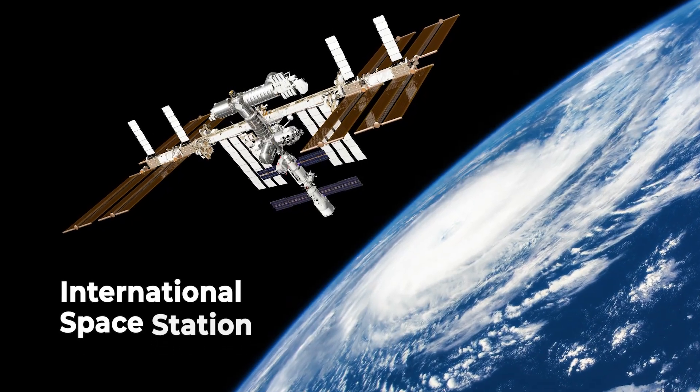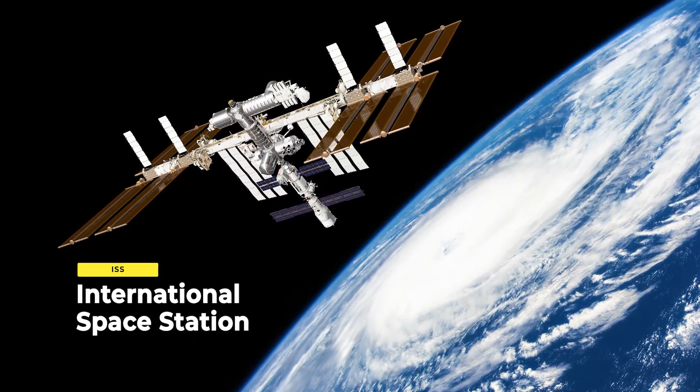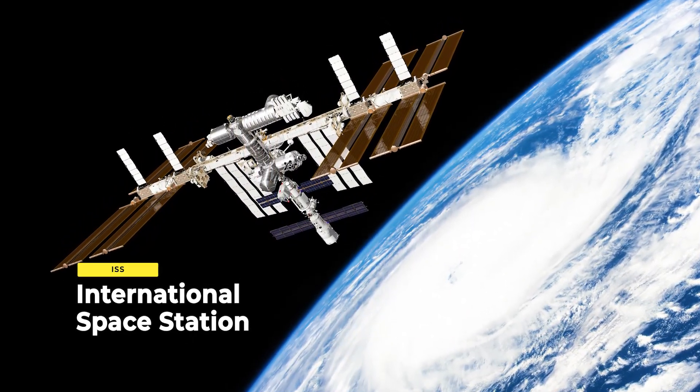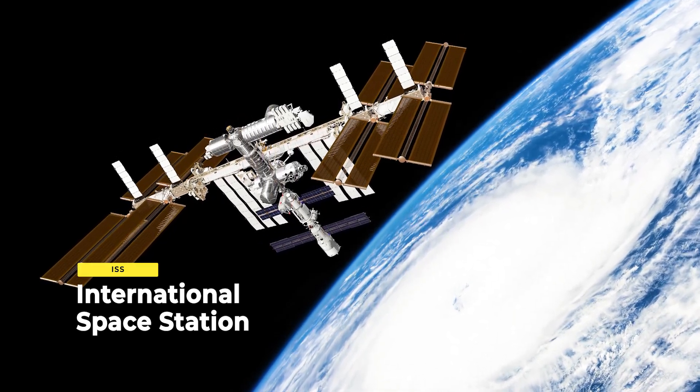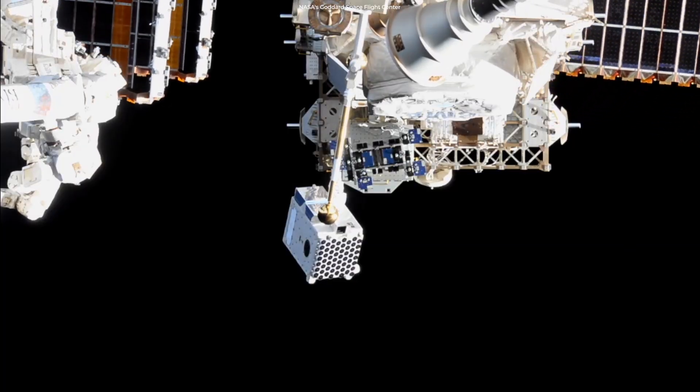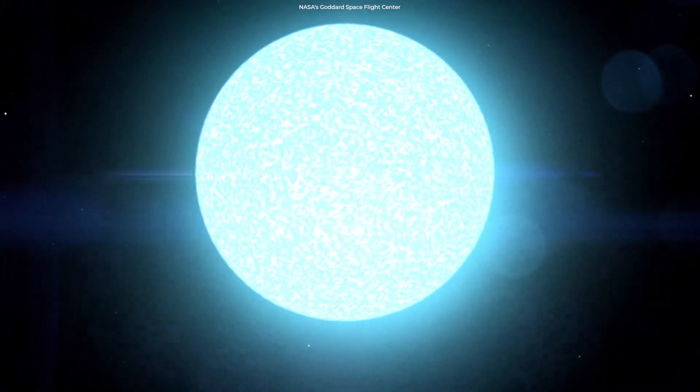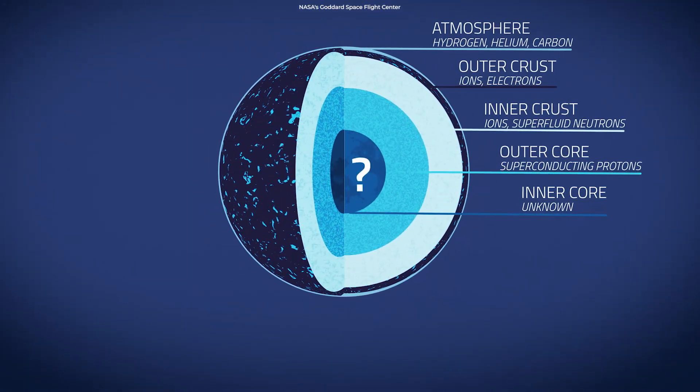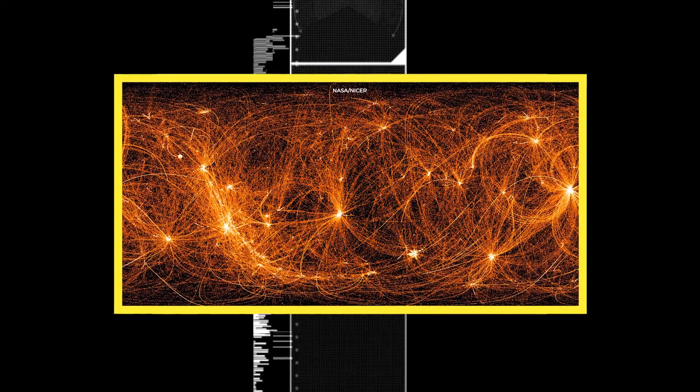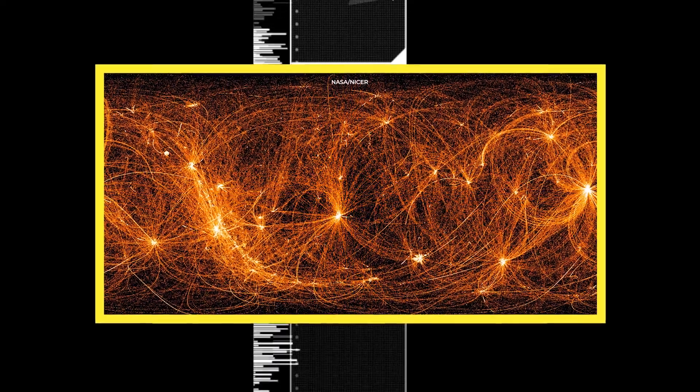NICER is an instrument aboard the International Space Station, which has been conducting observations since 2017, far away from the obstruction of the Earth's atmosphere. The instrument was built solely for the purpose of learning what happens inside neutron stars, but astronomers will also use it to create an X-ray map of the universe.